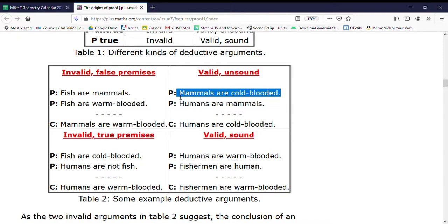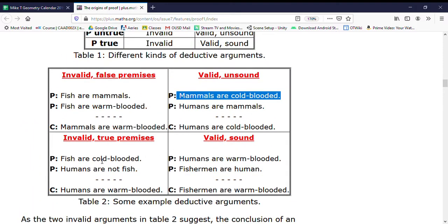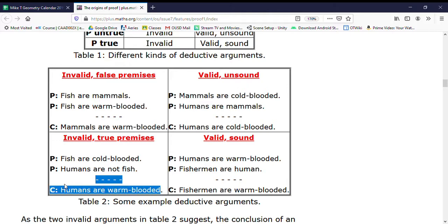Let's see: fish are cold-blooded, humans are not fish, humans are warm-blooded. Okay, so these are both valid statements, but this conclusion has nothing really to do with the premises. It is a true statement, but it doesn't follow from up here, so it's invalid—the reasoning is bad.